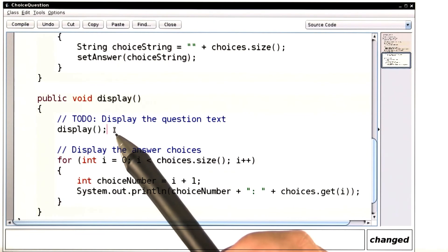Let's do it. Here I'll call display. That should display the text, and then here I'm displaying these choices. We'll run the demo.